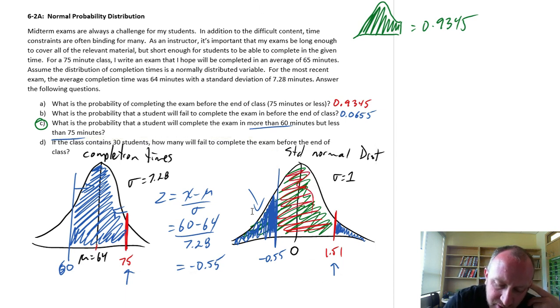So if we look up in our tables, what's that probability that corresponds to negative 55?